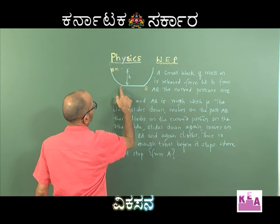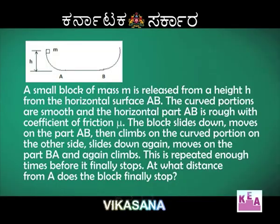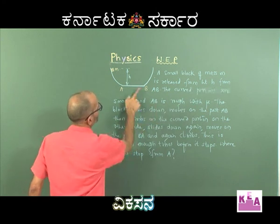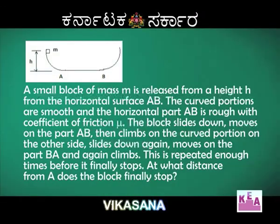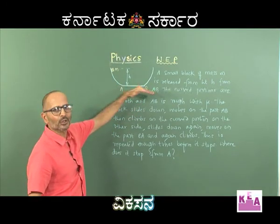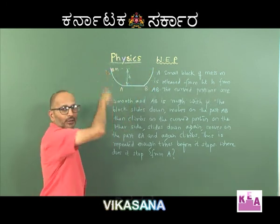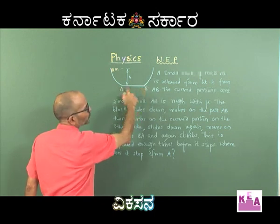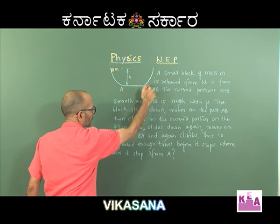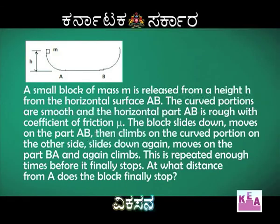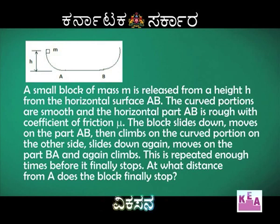The two curved portions are smooth and AB is rough with coefficient of friction mu. The block slides down from here, moves on part AB, and because it is left with some energy it climbs the second curved portion. It comes down, moves along AB, loses part of its energy because the surface is rough. It climbs to a particular height, comes back, moves on surface BA again, and continues back and forth like this.